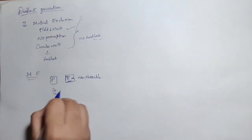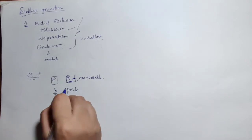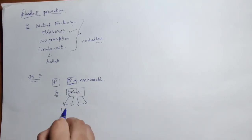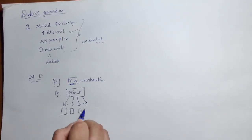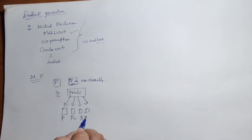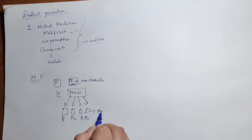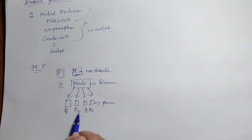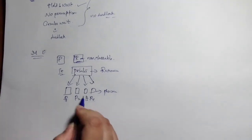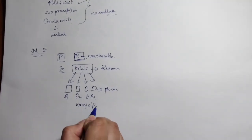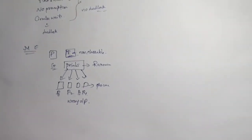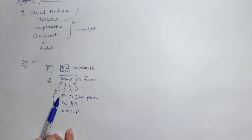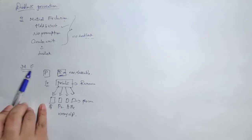For example, consider this resource as a printer. If we share this printer among multiple processes P1, P2, P3, P4, it will produce the wrong output. So it is not possible to eliminate mutual exclusion in deadlock prevention — we cannot remove mutual exclusion.